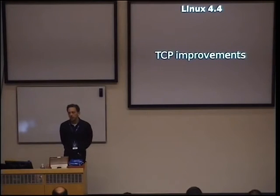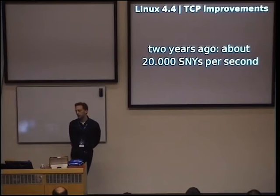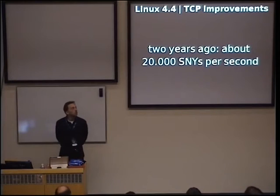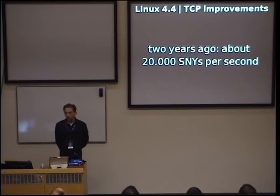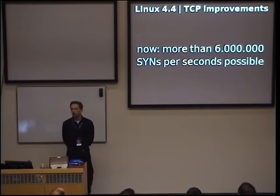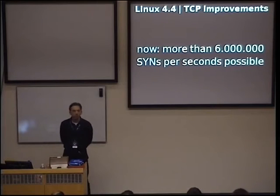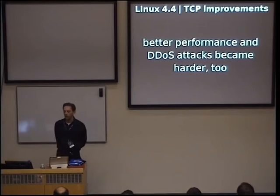There were also improvements to the TCP stack and its locking. Two years ago it was possible to do about 20,000 SYNs per second — the part of the handshake when two systems connect. Thanks to improvements over the past few years, and what got into Linux 4.4, with the proper software and everything enabled, it's now possible to do 6 million SYNs per second. That doesn't only make things faster, it also makes DDoS attacks harder because you need way more systems to bring a server down.